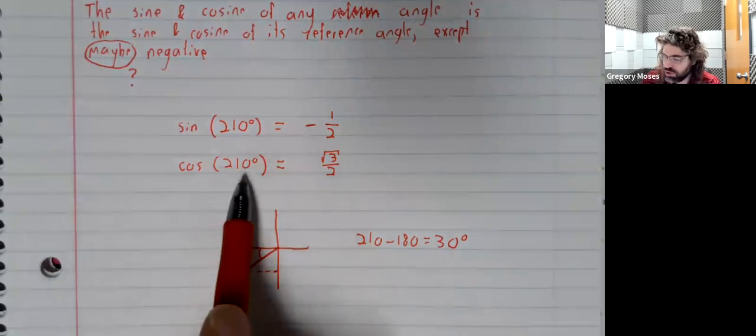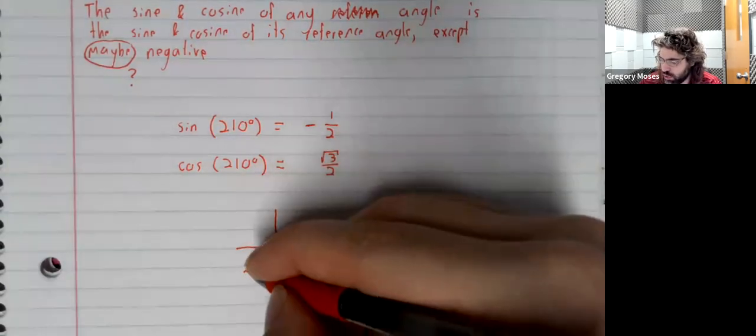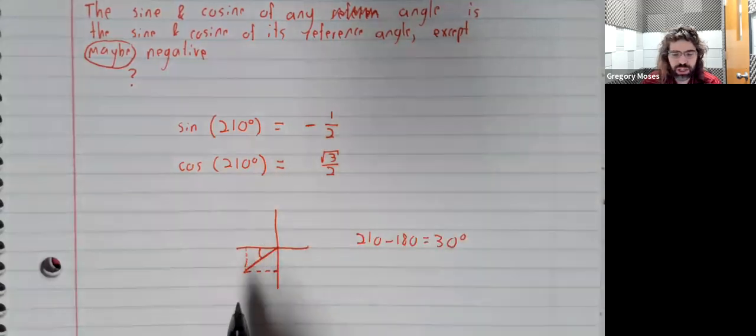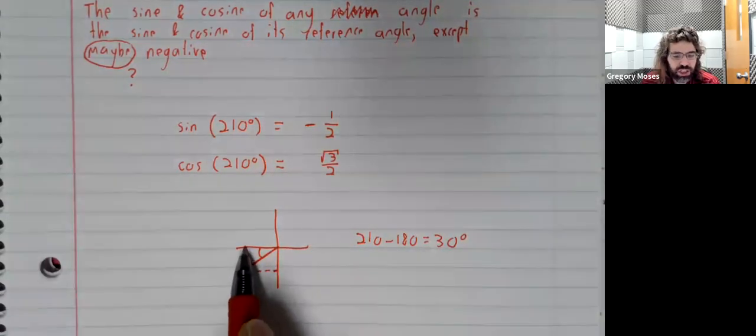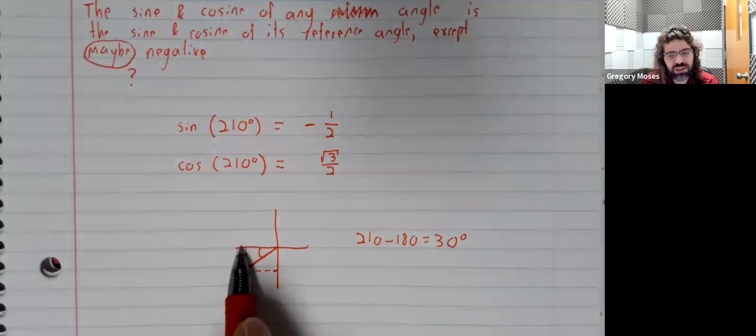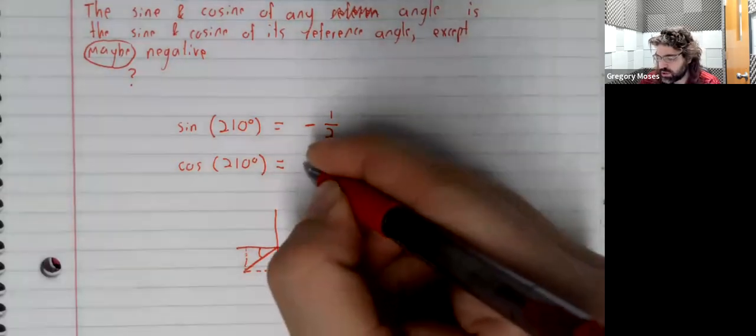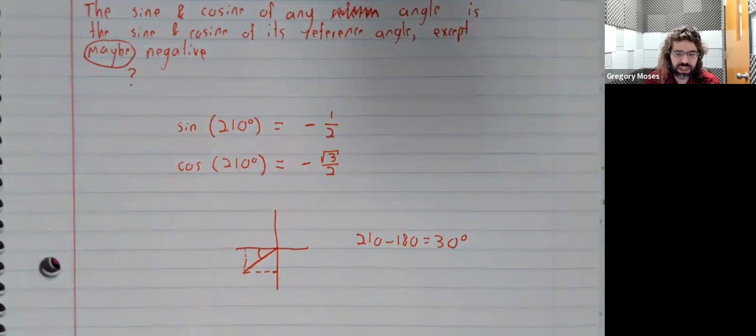The cosine of this angle is the x coordinate. It's over here. The x coordinate is negative. So the cosine has to be negative.